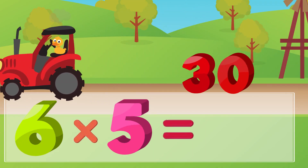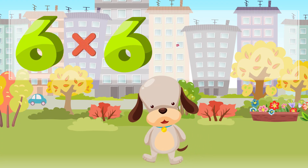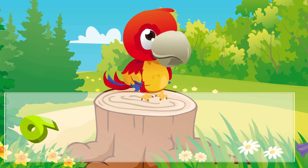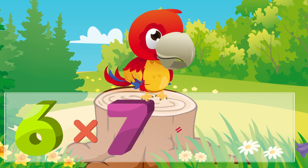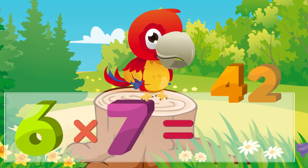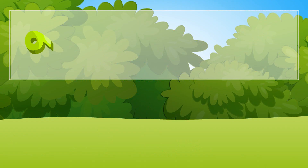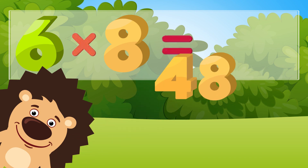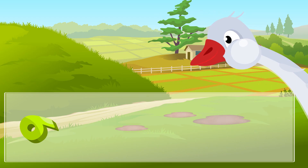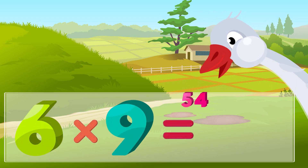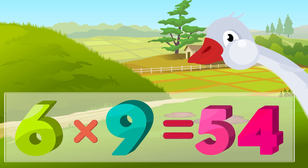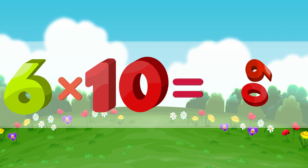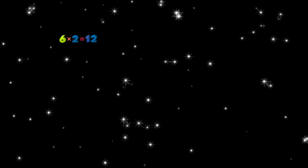Six times six is thirty-six, six times seven is forty-two, six times eight is forty-eight, six times nine is fifty-four, six times ten is sixty.